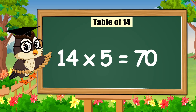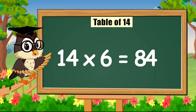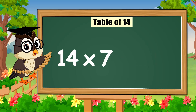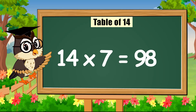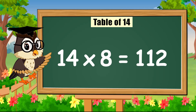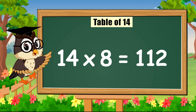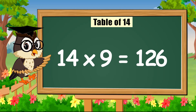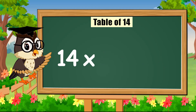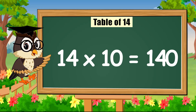Fourteen times five is seventy. Fourteen times six is eighty-four. Fourteen times six is eighty-four. Fourteen times seven is ninety-eight. Fourteen times seven is ninety-eight. Fourteen times eight is one hundred and twelve. Fourteen times nine is one hundred and twenty-six. Fourteen times ten is one hundred and forty.